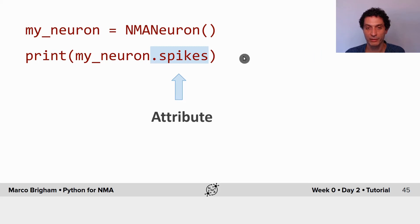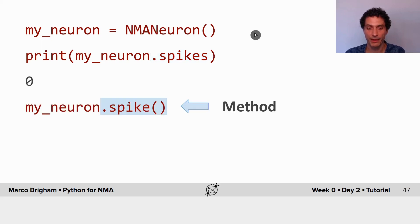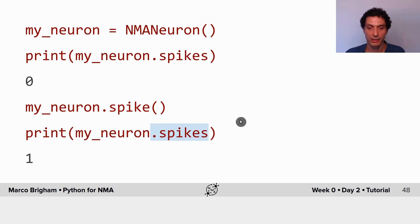I can print the attributes of my class. Here, since we've initialized it and did not give any initial spikes, it will have zero spikes. Then we can call the only method of the class to make it spike, and then the attribute spikes increases by one.